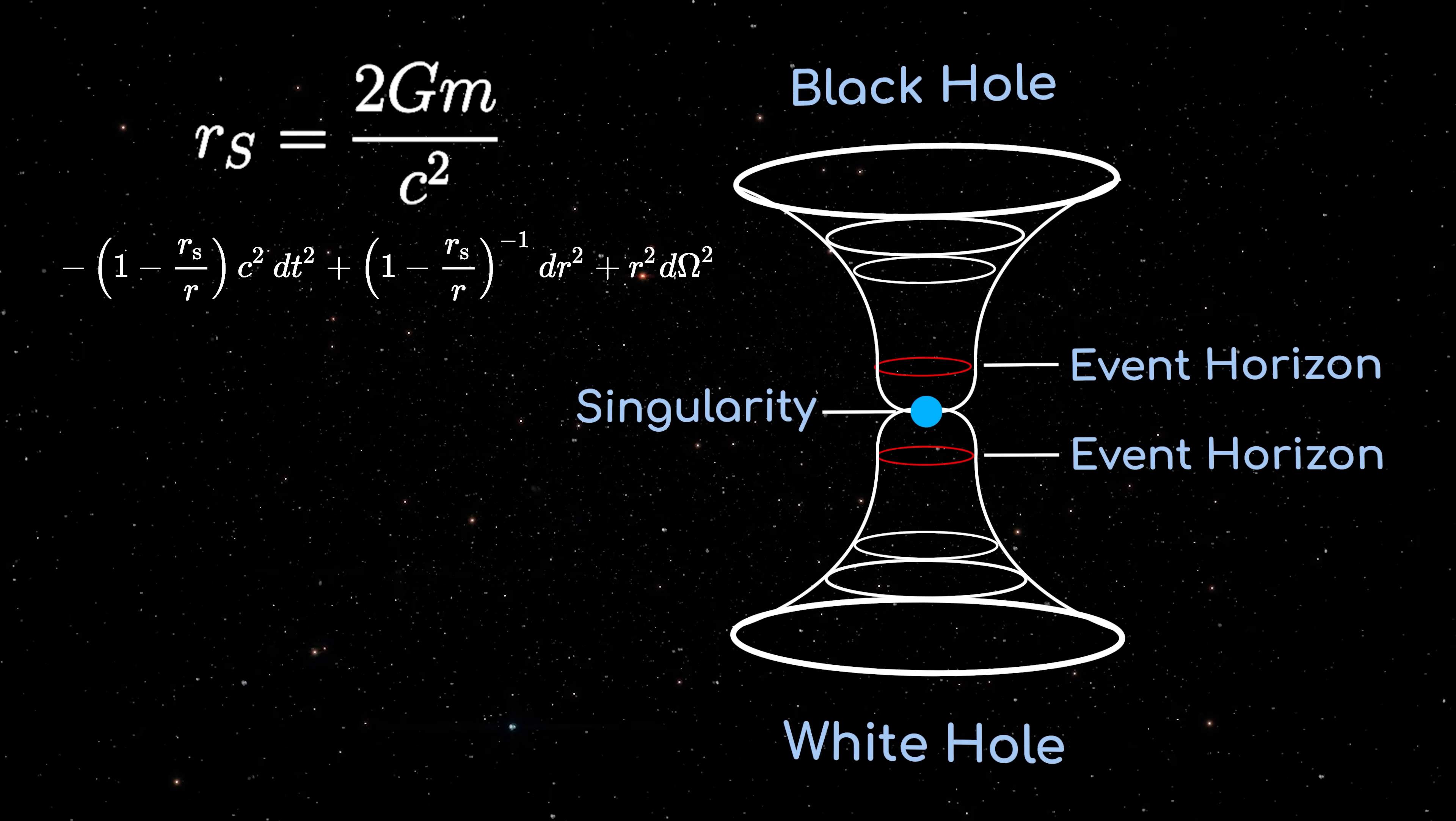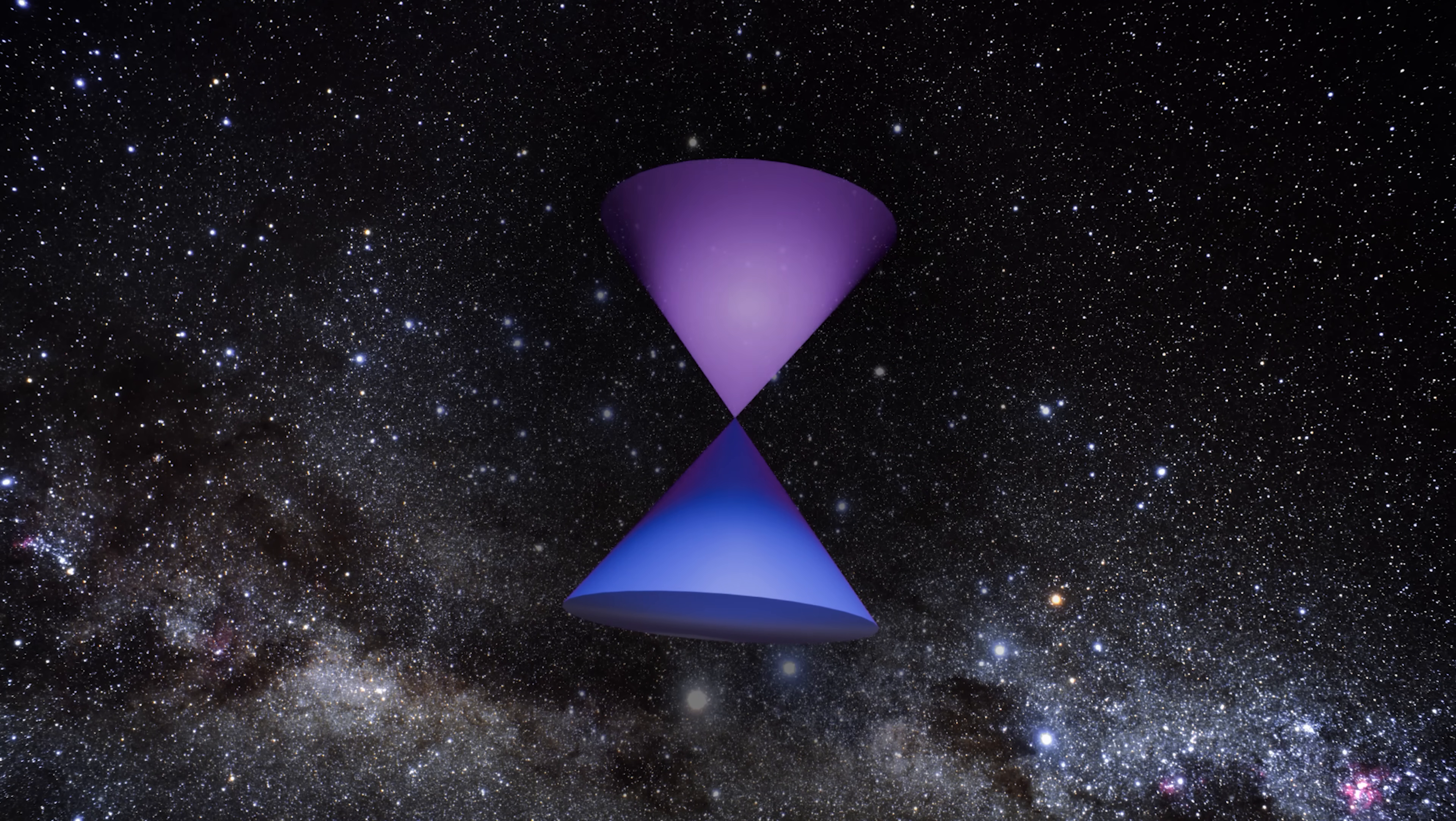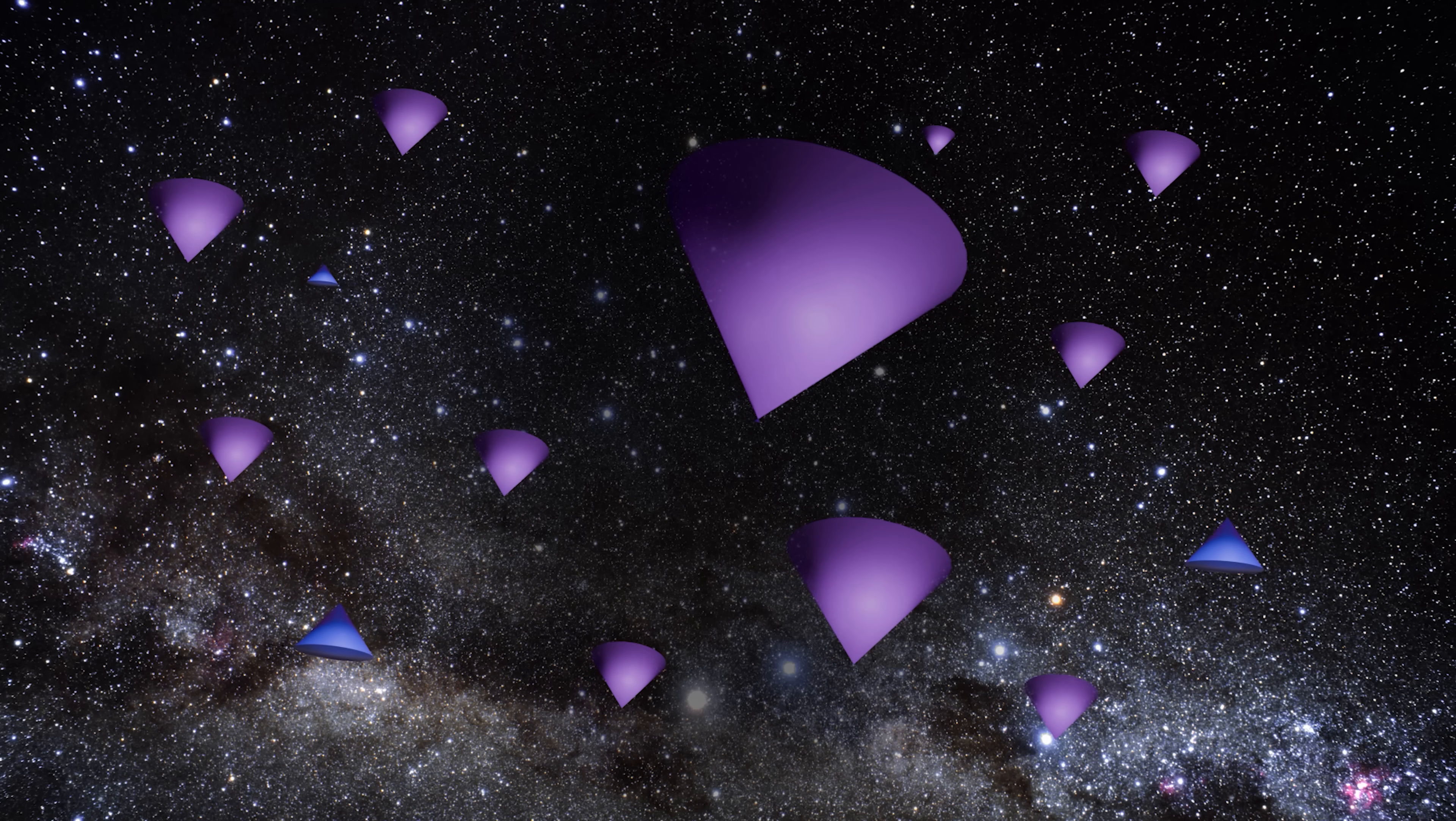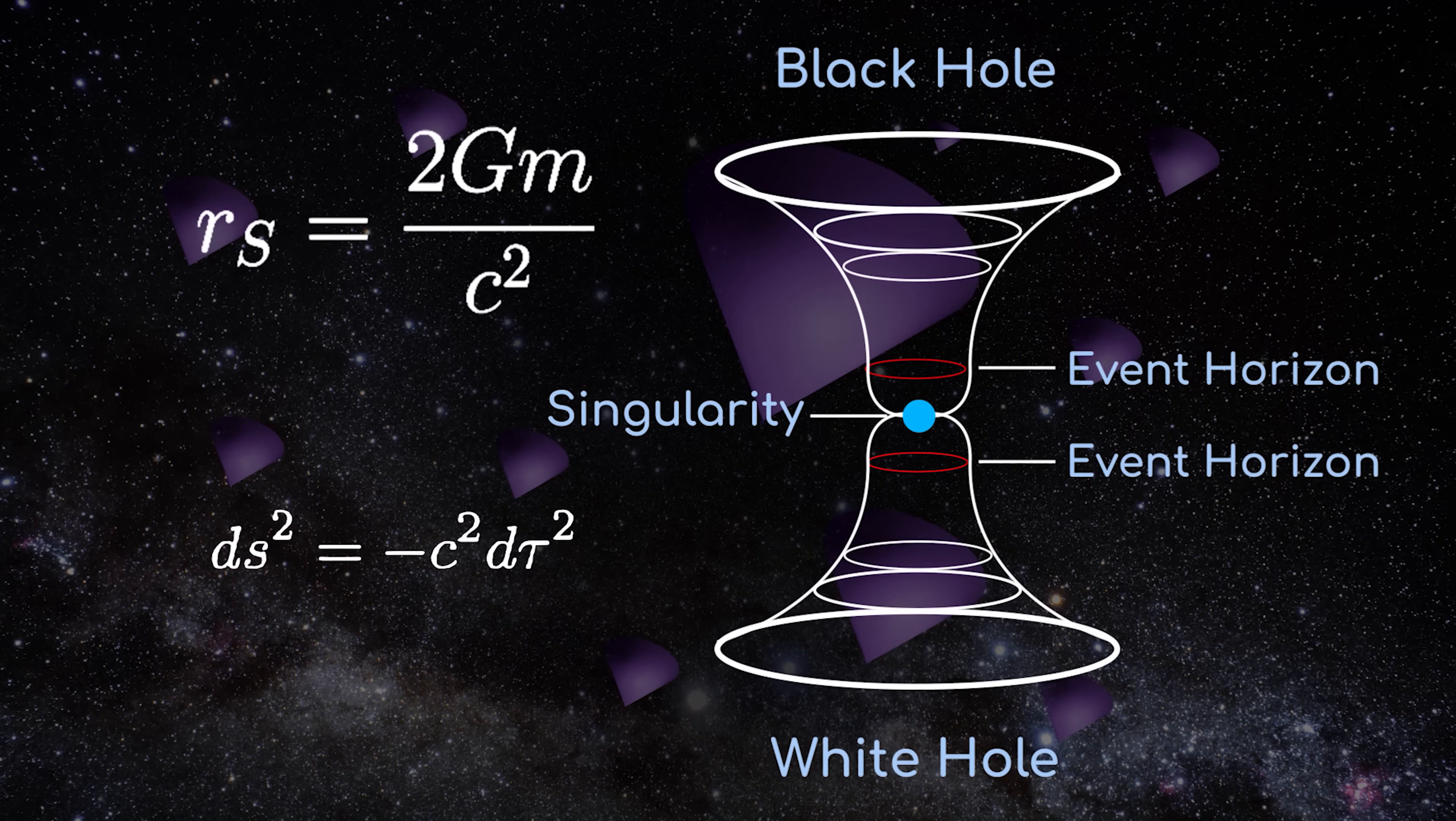This doesn't mean that every black hole comes attached to a white hole, though. Just like with cones, the real universe can contain chopped up pieces of the full mathematical solution. But this does mean that even if white holes are less common than their black hole counterparts, or even if there aren't any white holes connected to our universe at all, it doesn't make them any less scientific, in the sense that they are equally consistent with the laws of physics.